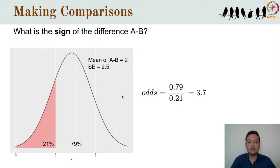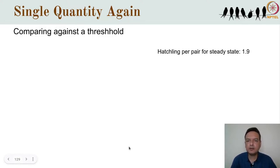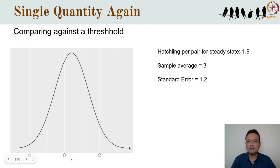This can also be used when estimating a single quantity and comparing it against some threshold. For example, say you want to find out whether the average number of eggs that pairs of great Indian bustards hatch is greater or less than the number needed to maintain the population at steady state. Suppose given the mortality rate, each pair must hatch 1.9 eggs per year for the population to be stable. You study bustard breeding in Rajasthan and find the average number of hatchlings is 3 with a standard error of 1.2. If the true population average is above 1.9, the population will increase; if below, it will decrease.